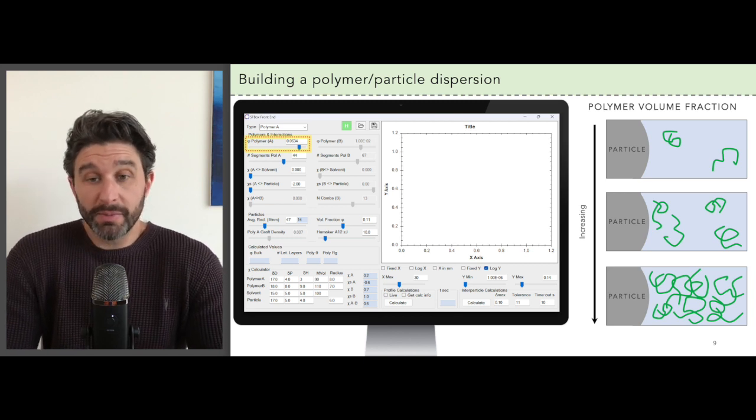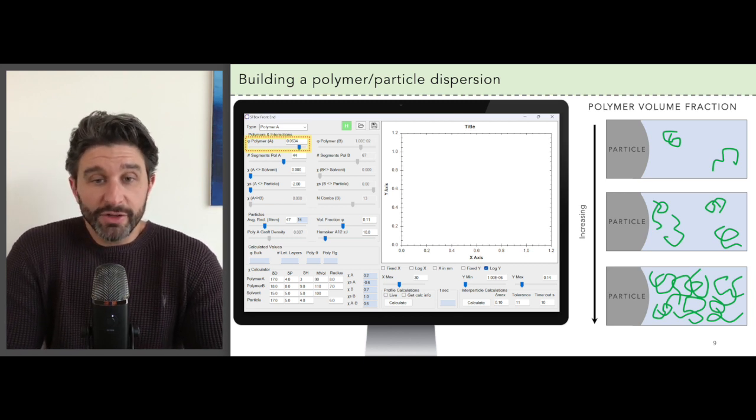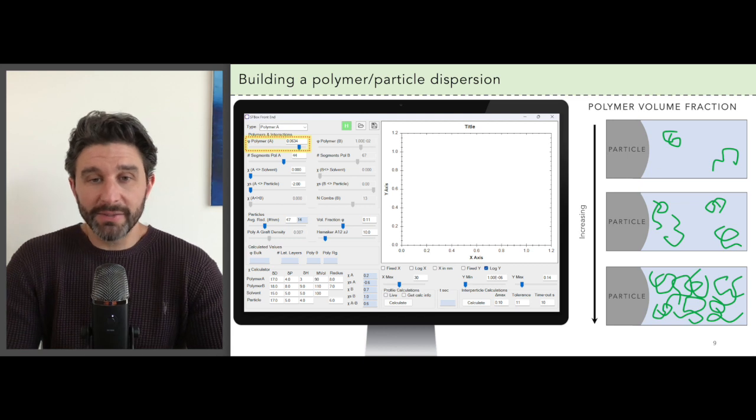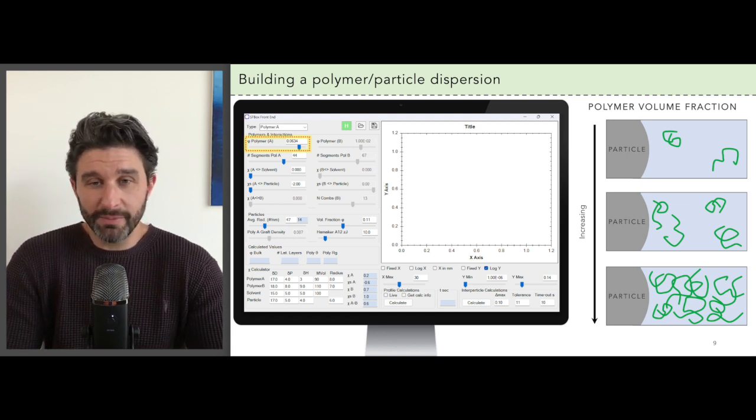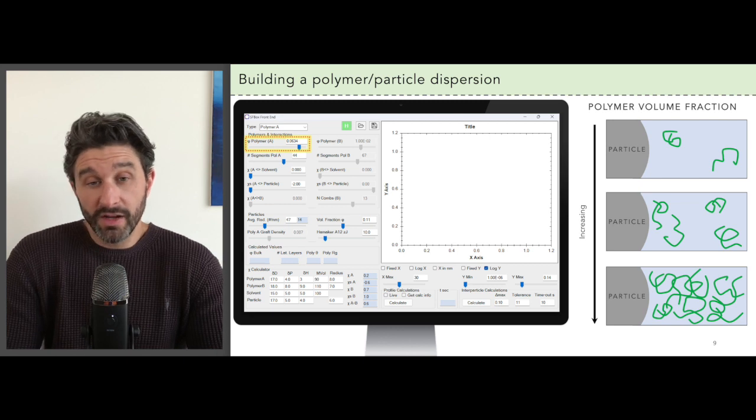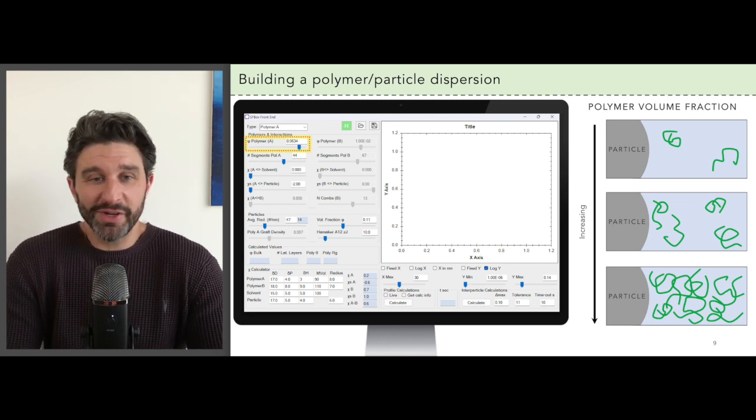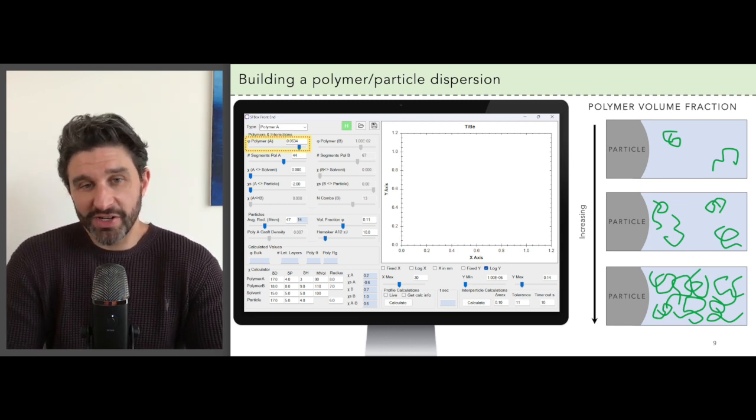The first parameter is the polymer volume fraction. This tells you of course the amount of space that's occupied by the polymers in the solvent. It's just the concentration of the polymers times the polymer length. Obviously if you increase the volume fraction, that means there's a larger concentration in your solution.